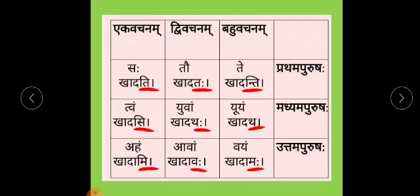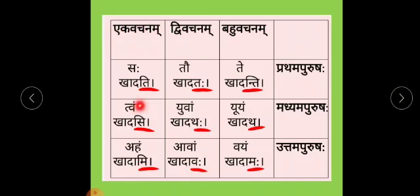Here I have underlined some letters — these are the endings used for each kind of Purusha. For example: Sah Khadati (ending Ti), Tau Khadataha (ending Taha), Te Khadanti. So Ti, Taha, and Anti are the endings used for Prathama Purusha in Ek Vachanam, Dvi Vachanam, and Bahu Vachanam.